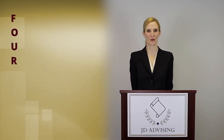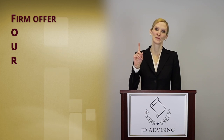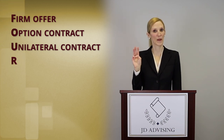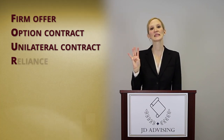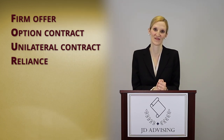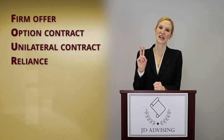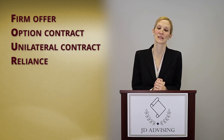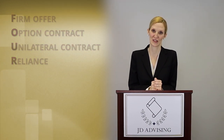That's the general rule. But there are four exceptions to this general rule, and conveniently the mnemonic we use is FORE. The four exceptions are: firm offer, an option contract, beginning performance on a unilateral contract, and reasonably foreseeable justifiable substantial reliance on an offer. The one we're going to focus on right now is a firm offer.